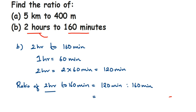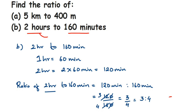Now we're going to reduce this further. This will be 120 divided by 160. Cancel the zero; then cancel 12 and 16: four threes are 12, four fours are 16, so we get 3 over 4. Written as a ratio, this is 3 is to 4. Note: in the reduced form of a ratio, we don't write the units. So the ratio of two hours to 160 minutes is 3 is to 4.